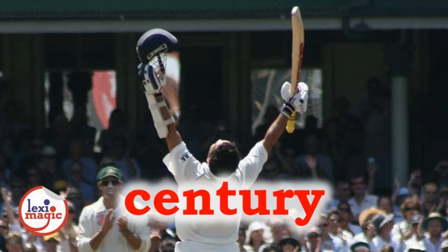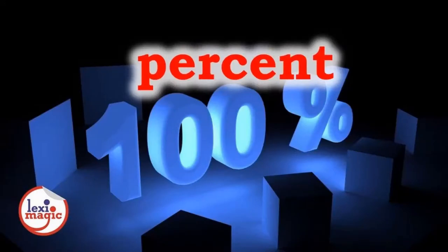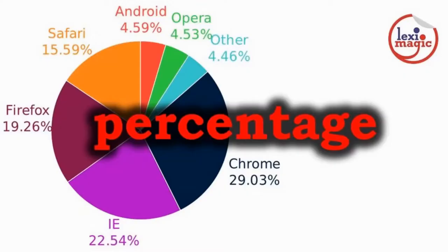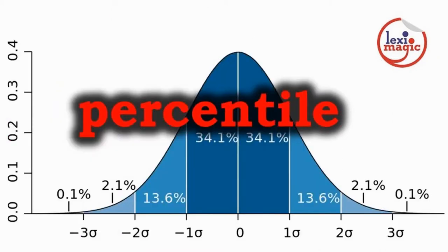Century is a period of hundred years; in sports, a score of hundred runs. Percent means for every hundred, expressed as a fraction of hundred. Percentage is an amount of something that is represented as a fraction of hundred. Percentile indicates the percentage of a population that falls below a specified number.